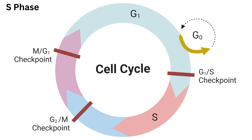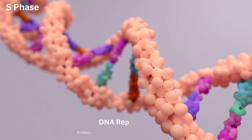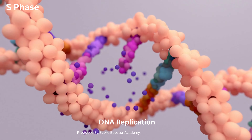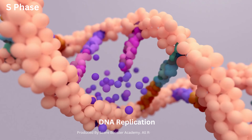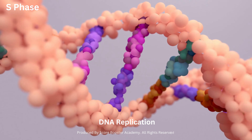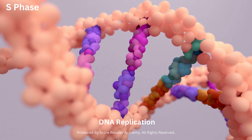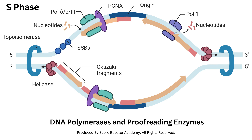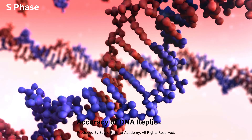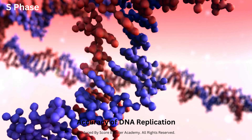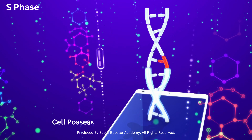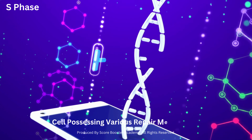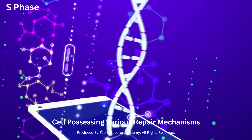The S phase is dedicated to DNA replication, during which the cell duplicates its genetic material to ensure each daughter cell receives a complete set of chromosomes. Sophisticated molecular machinery, including DNA polymerases and proofreading enzymes, ensures the accuracy of DNA replication. The cell possesses various repair mechanisms to fix any errors or DNA damage that may occur during this process.